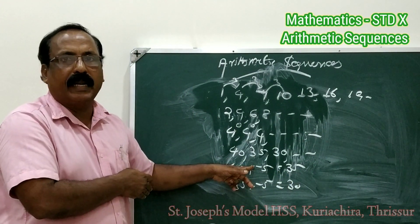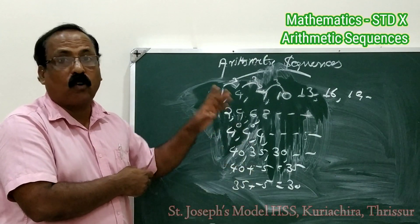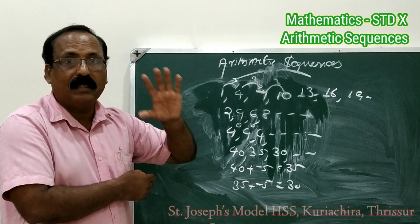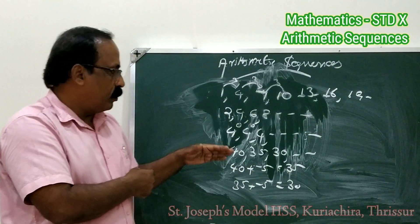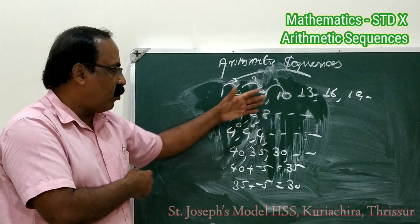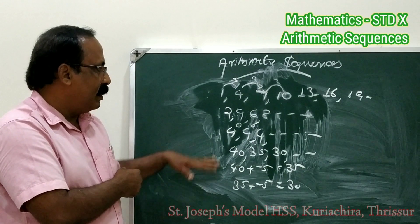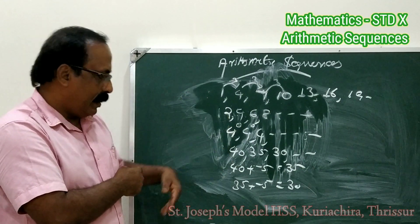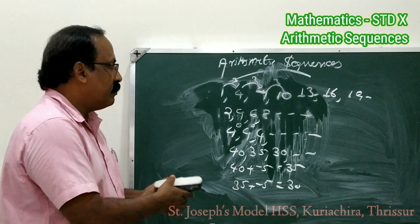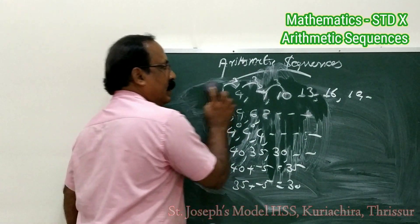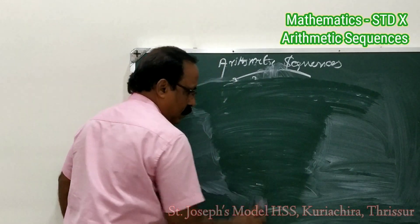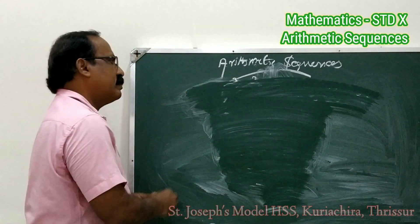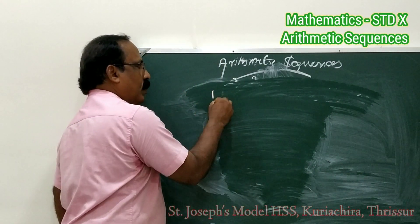So minus 1 is getting subtracted 1 by 1. This is also an arithmetic sequence with a common difference of negative 5. So it will be a decreasing arithmetic sequence. That is the first question. Again, look at the same example.